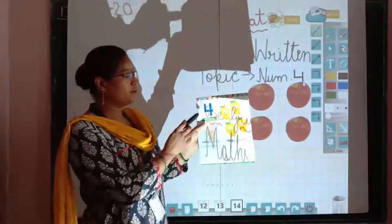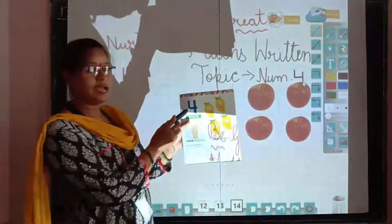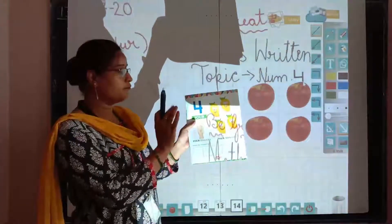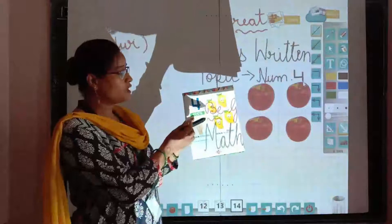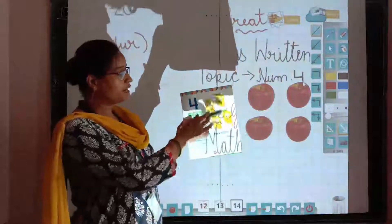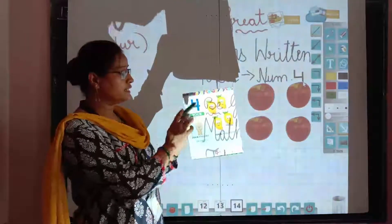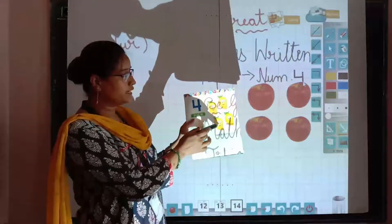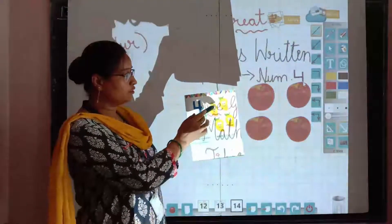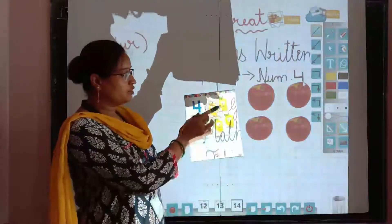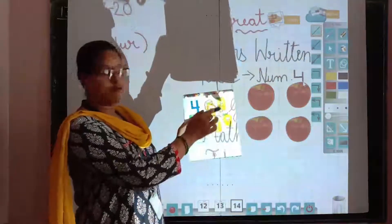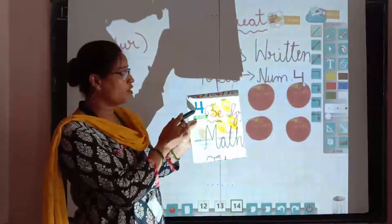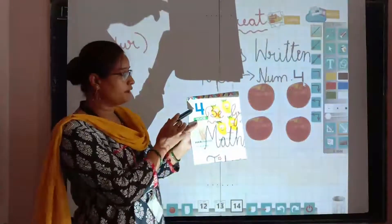What do you see? Number 4. Now number 4 counts as number 4. What does it make? Mango. How much is it? 1, 2, 3, 4. This is 4 mangoes. And this is number 4.